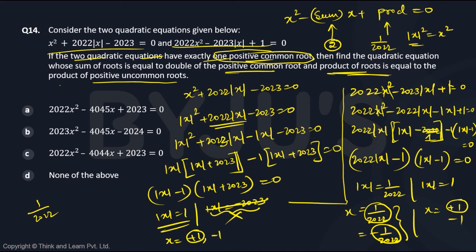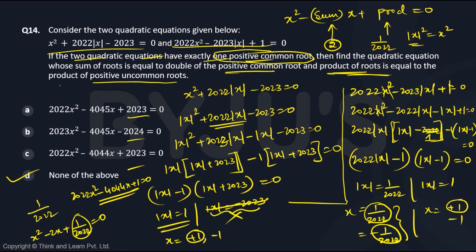The required equation is x² − 2x + 1/2022 = 0. Simplifying by multiplying through by 2022 gives 2022x² − 4044x + 1 = 0. Checking the options, the constant term when you take the LCM becomes 1, and none of the given options match exactly, so the answer is 2022x² − 4044x + 1 = 0.